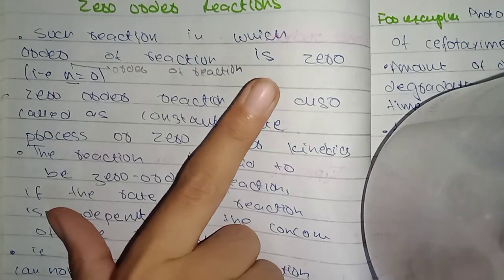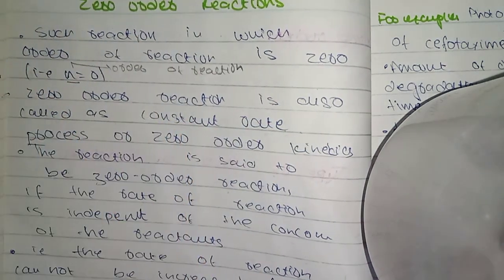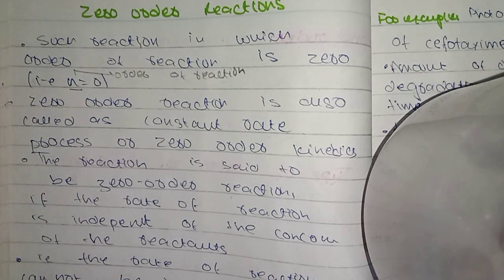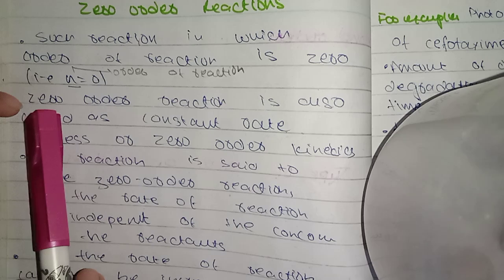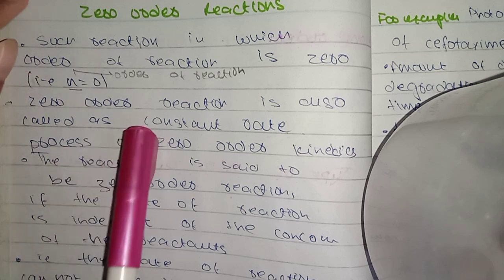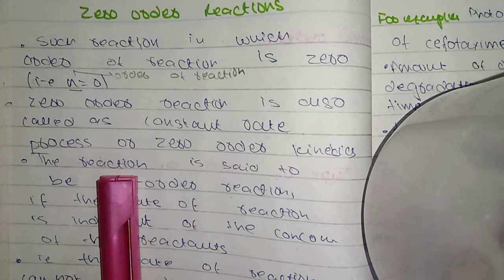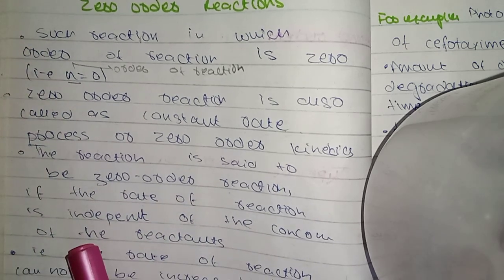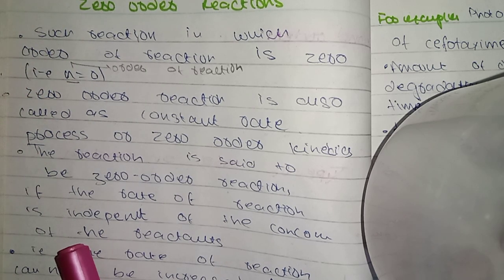If the order of reaction is zero, then we call those reactions as zero order reactions. Zero order reaction is also called as constant rate. We also call them constant rate processes and zero order kinetics.